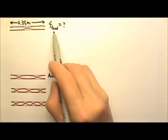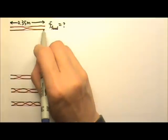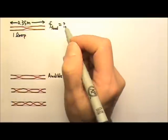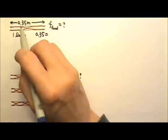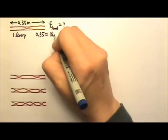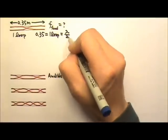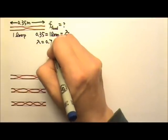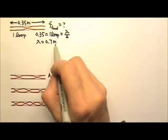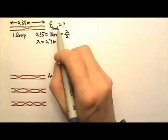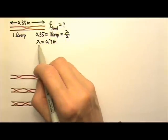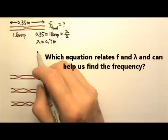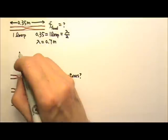Now let's find the fundamental frequency. In this tube, there are two half loops, which means a total of one loop. That means in this 0.35 meters, there is one loop. And one loop is always a half wavelength. That means one wavelength will be 2 times 0.35, which is 0.7 meters. So we have the wavelength of this fundamental frequency wave. But we want the frequency — which equation relates these two?